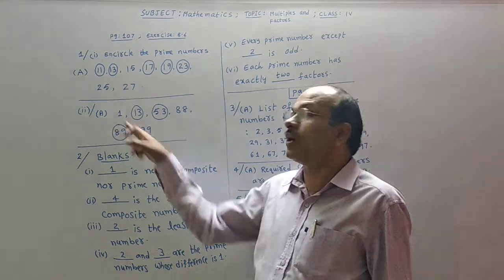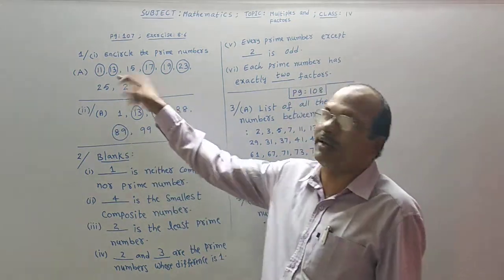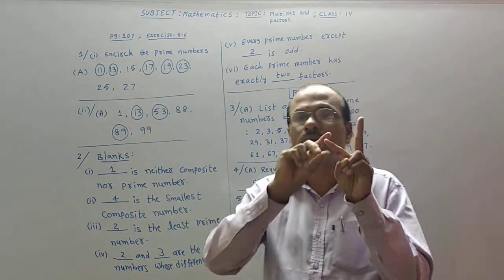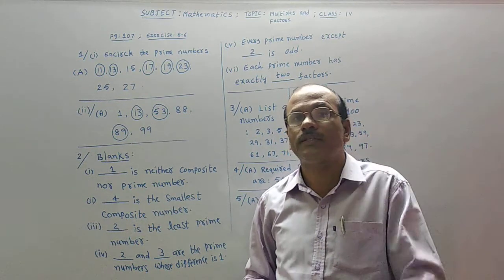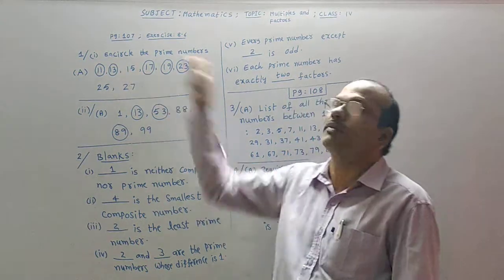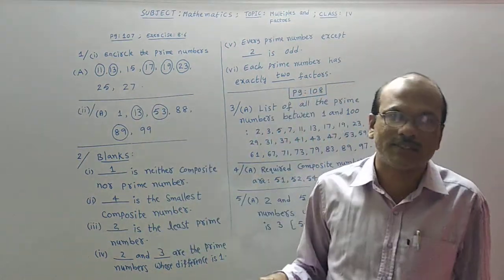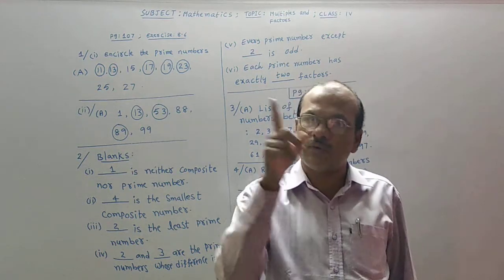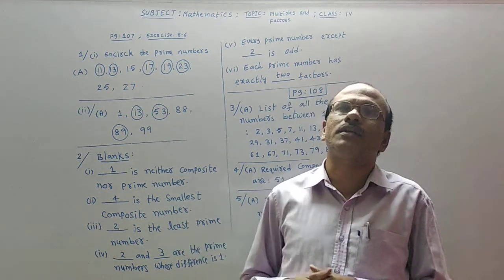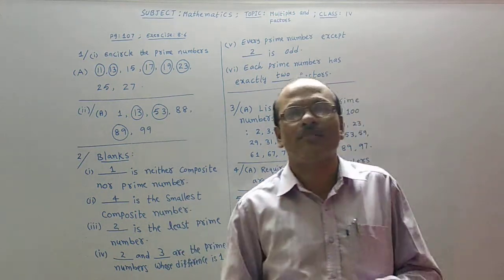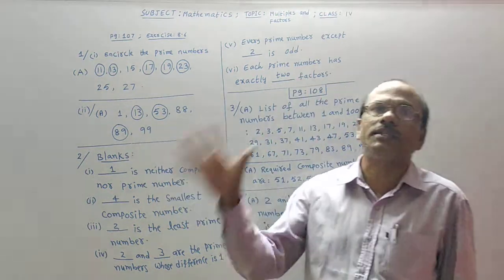Here, 1 is not having 2 different factors. As we saw for 11 — 11 has 1 and 11 as two different factors. But for 1, no different factors exist; only 1 itself is the factor. That is why 1 is not in the group of prime numbers. And 1 is not in the group of composite numbers either. 1 is neither a prime nor a composite — it is simply a number.